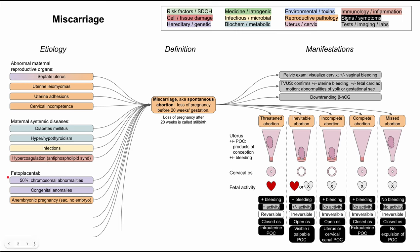Next are fetal and placental problems — issues with the placenta or the baby itself. The biggest cause of miscarriages is chromosomal abnormalities. We know about trisomy 21 (Down syndrome), which is not fatal, but many other chromosomal abnormalities involving non-disjunction during meiosis can cause miscarriage. These are often undetected and simply manifest as a spontaneous abortion — up to 50% of miscarriages can be caused by chromosomal abnormalities. Congenital anomalies can also cause miscarriage, and an anembryonic pregnancy — where there is a gestational sac but no embryo or fetal pole inside — is another fetal cause.